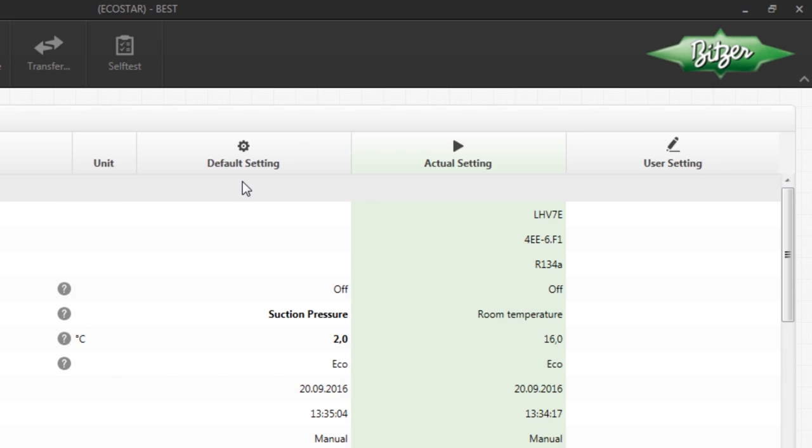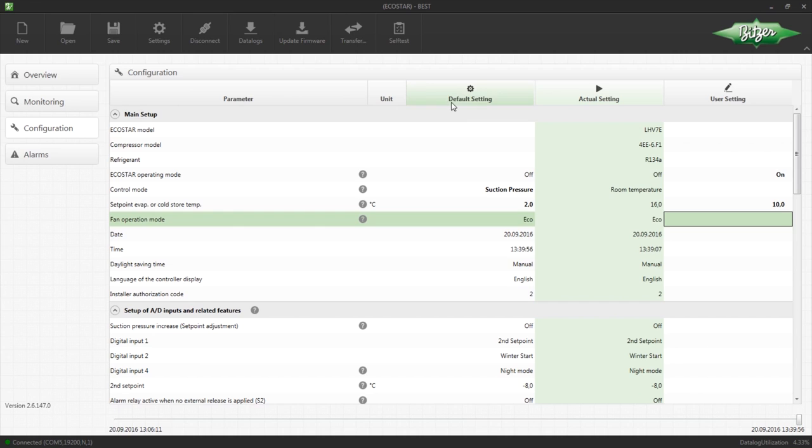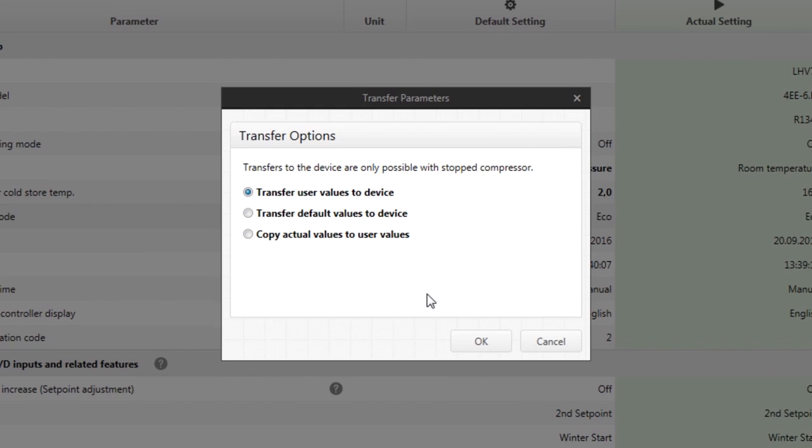Default settings are factory settings, whilst actual settings represent the operating settings currently active. The echo star can be switched on and other operating parameters changed under user settings. Click on transfer to transmit all the parameters to the device. These values will appear under actual settings a short time later.